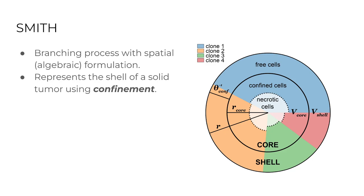The algebraic formulation of space we refer to as confinement. The idea is that in a solid tumor you have cells that are confined — they exist on the inside of the tumor and, because they are on the inside with no space to grow, they don't have access to resources and are not likely to divide or even survive; they slowly become necrotic. On the other side you have free, unconfined cells in the shell of the tumor that do have resources and space to grow, and those are the ones that continue dividing. This creates a spatial restriction and competition on the branching process model of cancer.